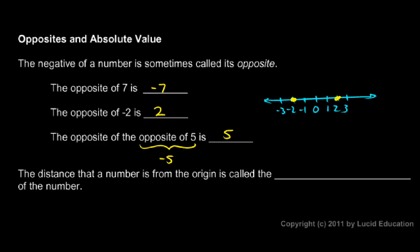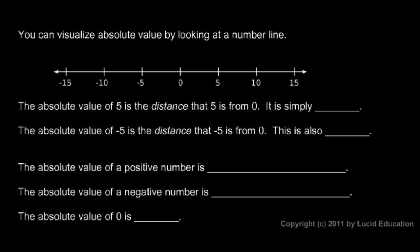The distance that a number is from the origin is called the absolute value of the number. Absolute value is the distance a number is from the origin. Remember, the origin is the zero point. You can visualize absolute value by looking at the number line. We'll just look at the numbers 5 and negative 5 here.